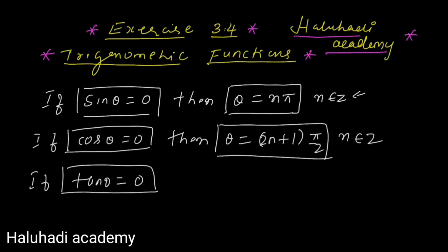Similarly, θ equals (2n + 1) into π by 3 — the same n applies as usual.